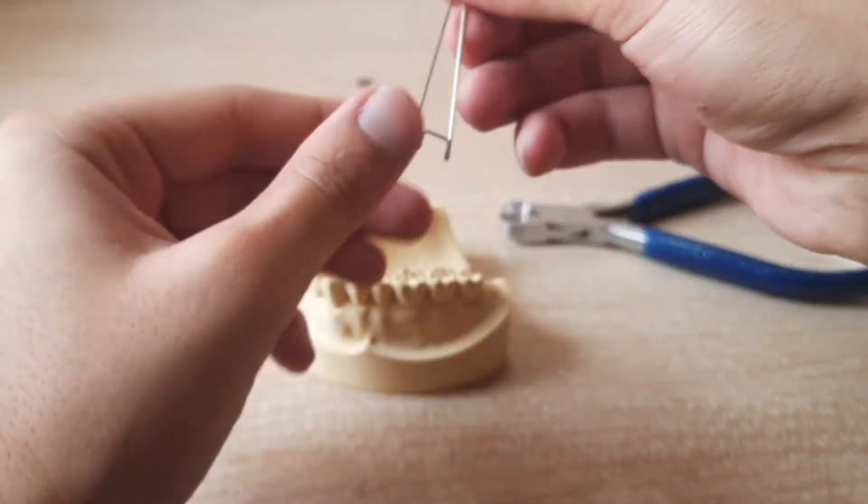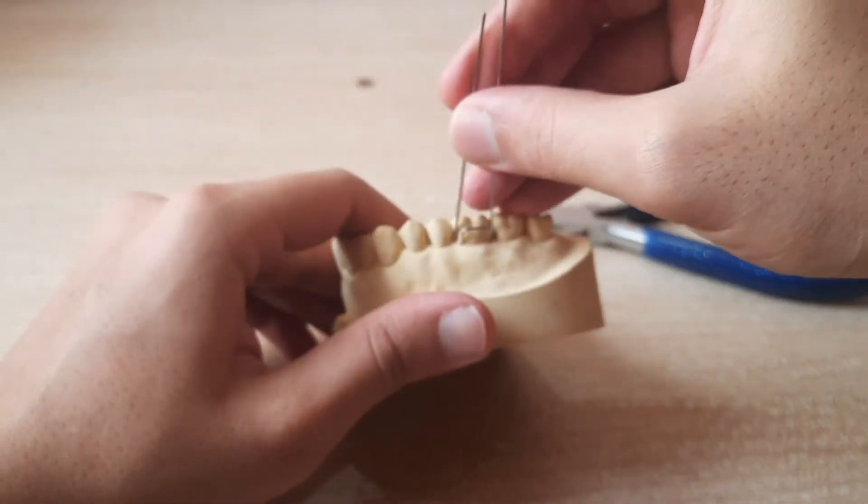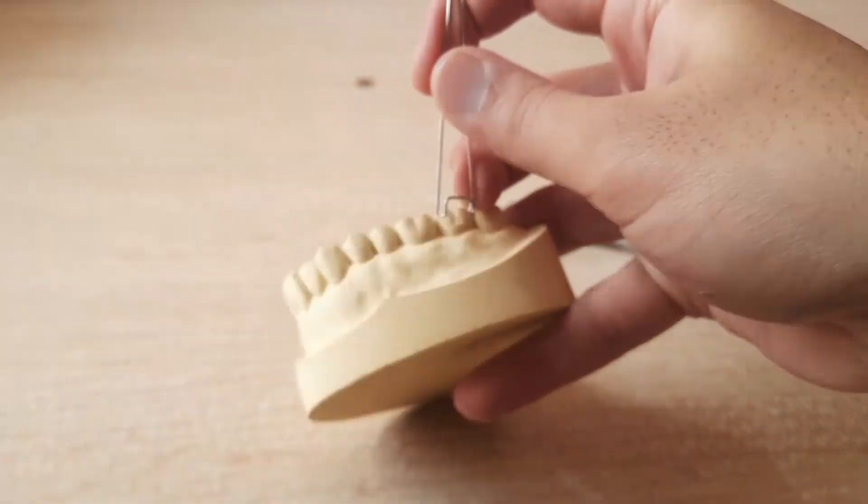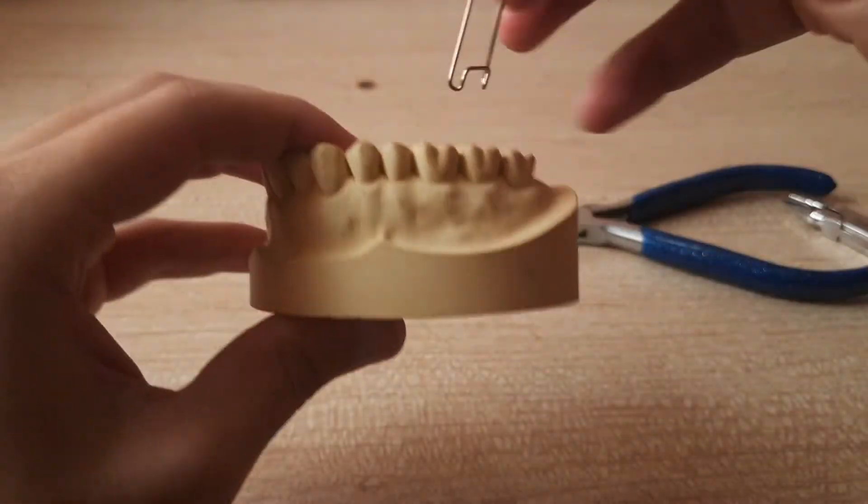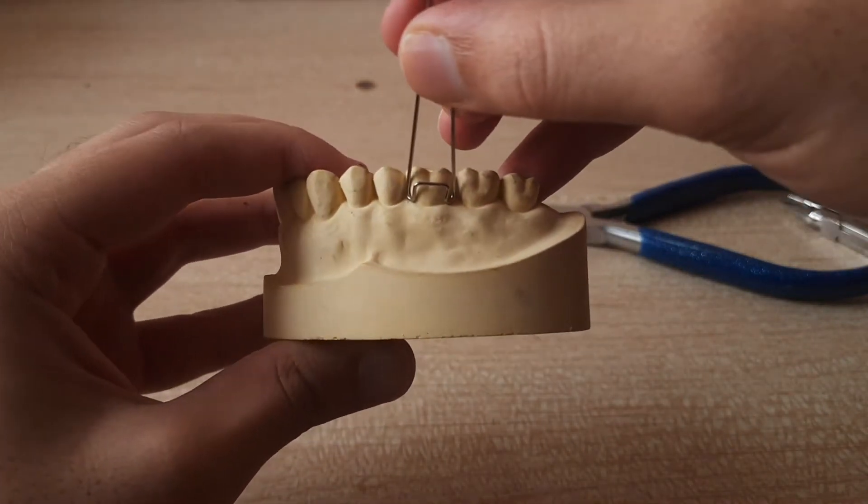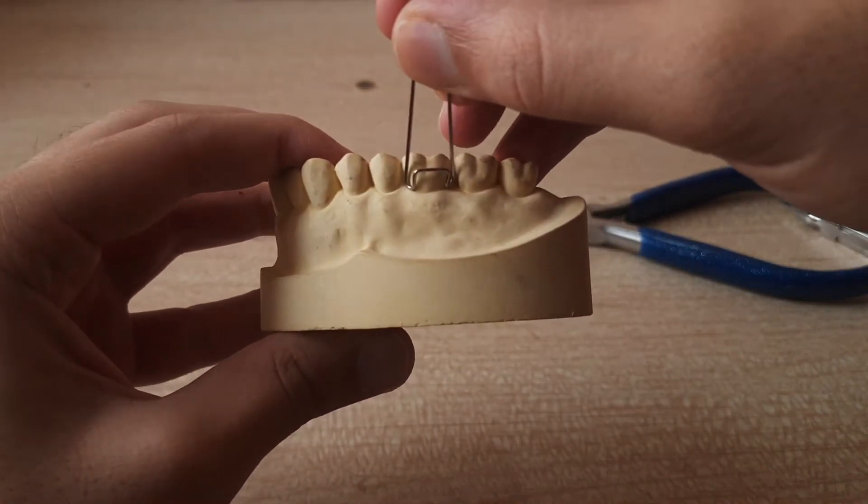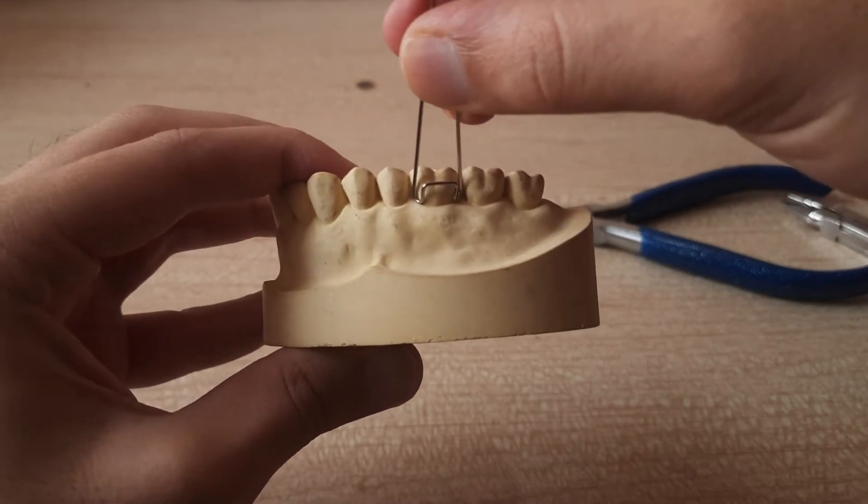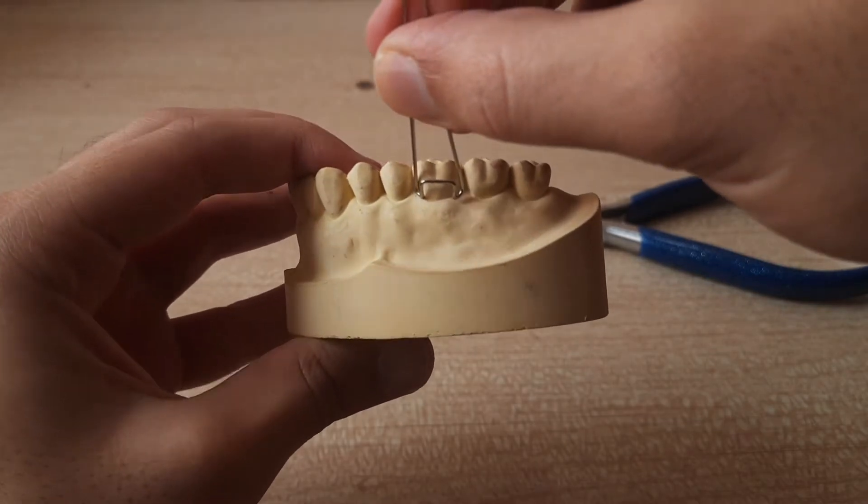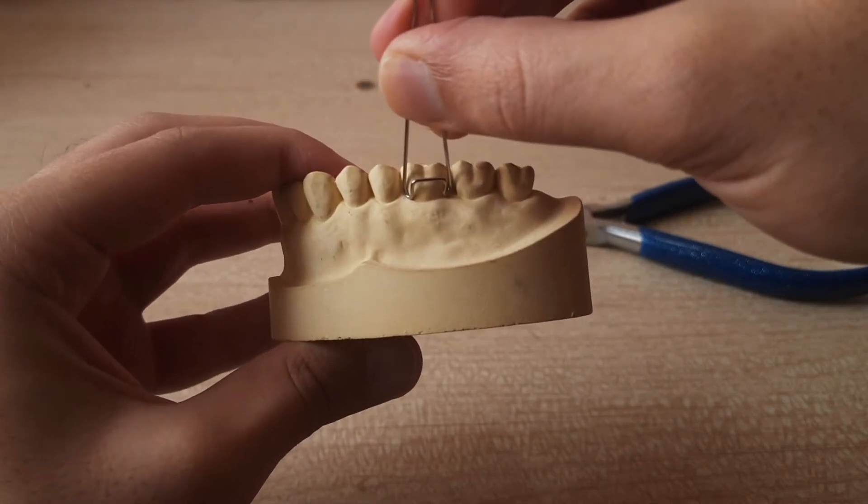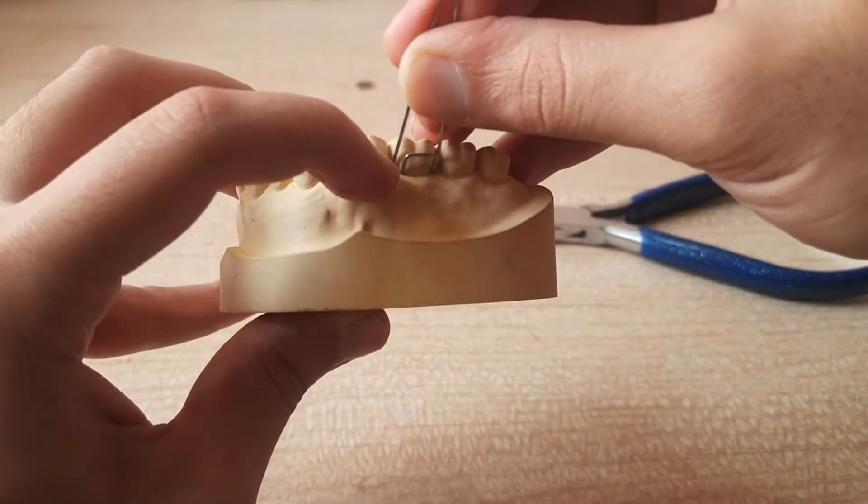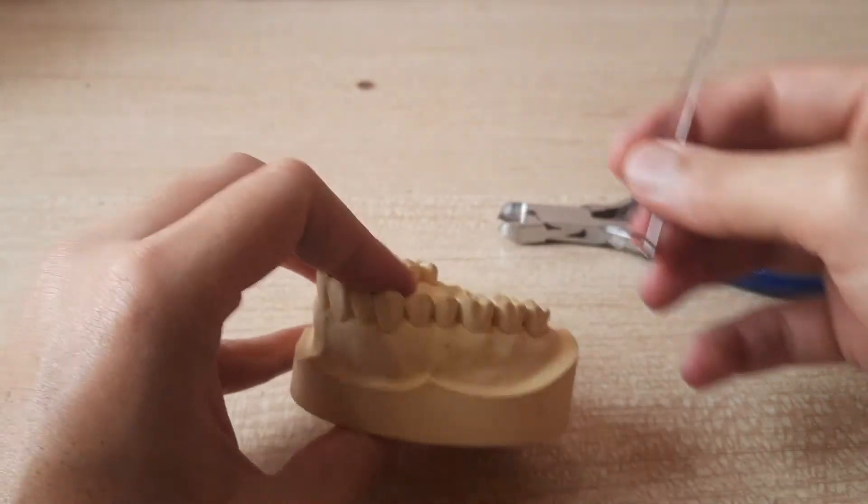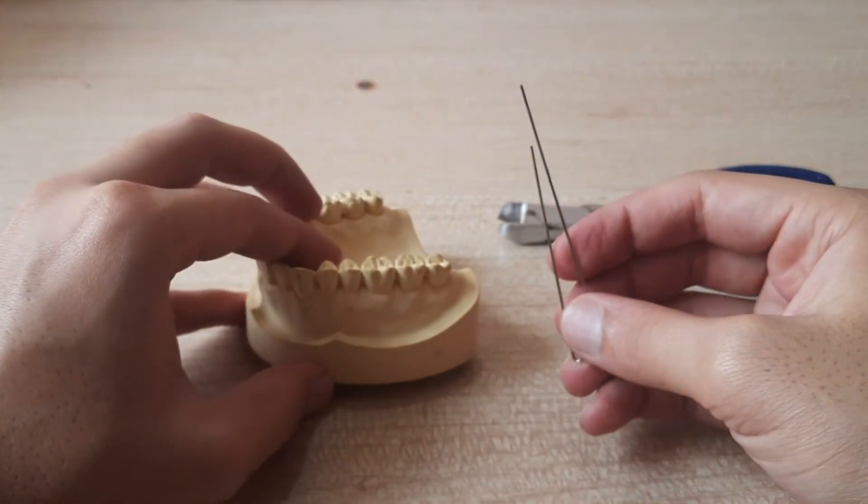Now we'll see how it looks on this thing. So you can clearly see that it is engaging. You can see that it is engaging into the mesio buccal and disto buccal undercuts and the bridge height is almost at the middle of the middle third. Now what you have to do is you have to make that million dollar bend on both sides.